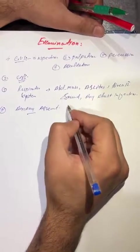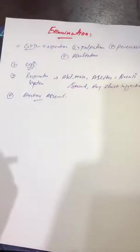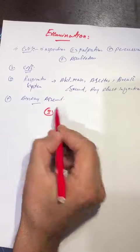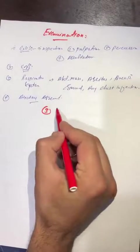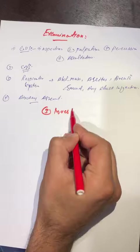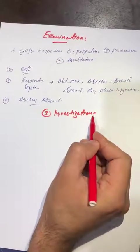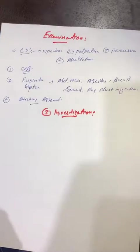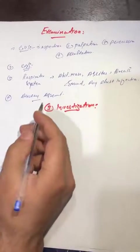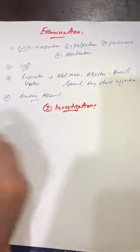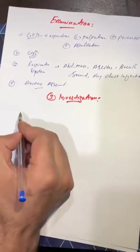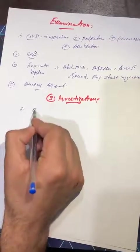The third part is investigations in preoperative evaluation. During investigations, before any surgery, we will investigate the patient through many blood tests, urea test, ECG, chest x-ray, etc. For investigations, we will do the blood CP test.